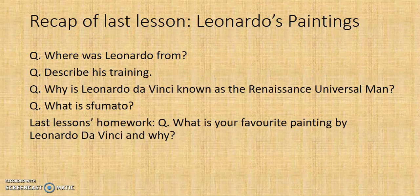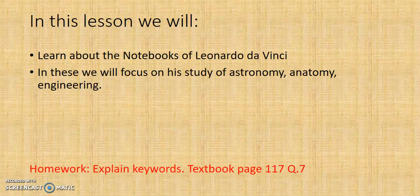Before we move on, let's do a recap on what we need to know: Where is Leonardo from? How was he trained? What do we mean by the renaissance universal man? And what is sfumato? Going forward we're going to learn about da Vinci's notebooks, focusing on his studies of astronomy, anatomy, and engineering.